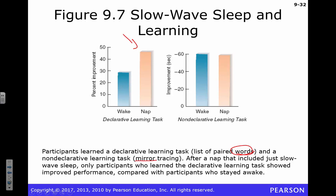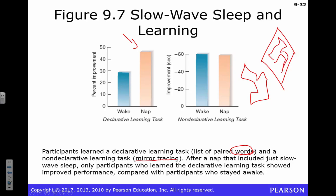For non-declarative memory, the example used is a mirror tracing task. You have a mirror, an object you have to trace, and you can only see the reflection — not your actual hand. You have to trace while looking in the mirror. It's learning how to do something and remembering how to do it — but it's not something you can simply declare that you know how to do; it's measured by your performance.